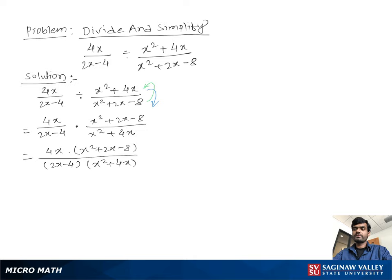Now, next step, we can write 4x times, now we take the factor x square plus 2x minus 8 which is x plus 4 times x minus 2 over...